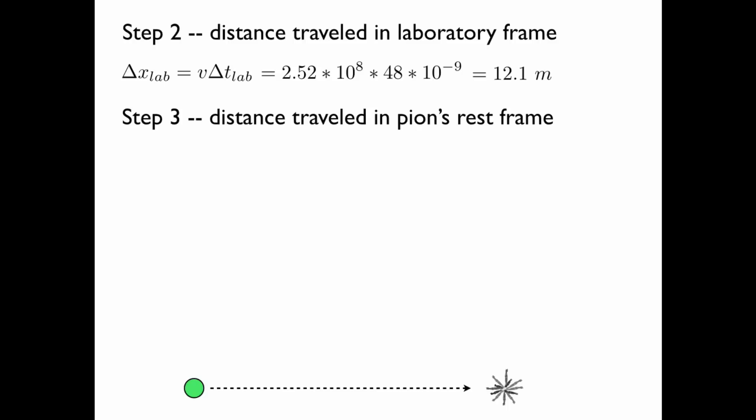Now let's find the distance traveled in the pion's rest frame. The same formula applies, except this is a bit of a trick question, because in the pion's rest frame, the pion is stationary. It's not moving. So in its own rest frame, it does not travel a single centimeter.